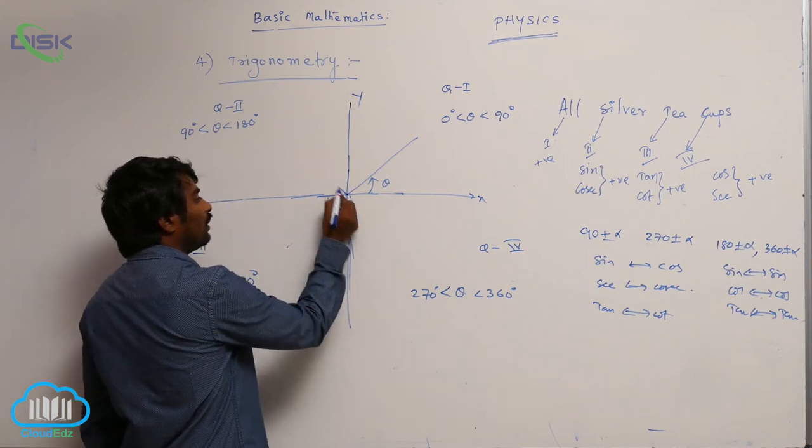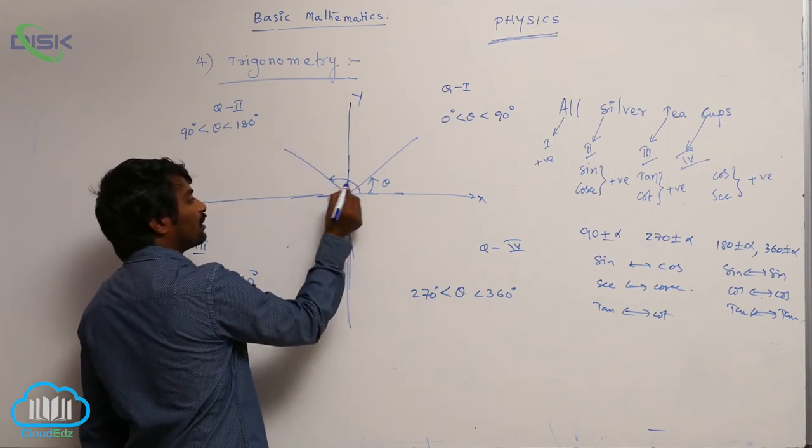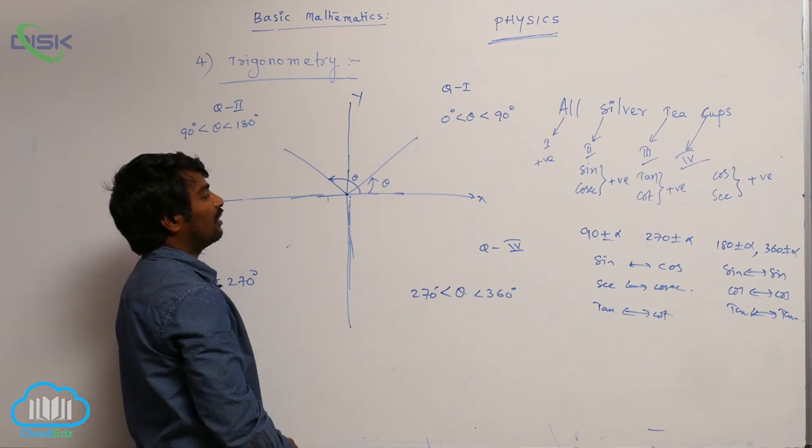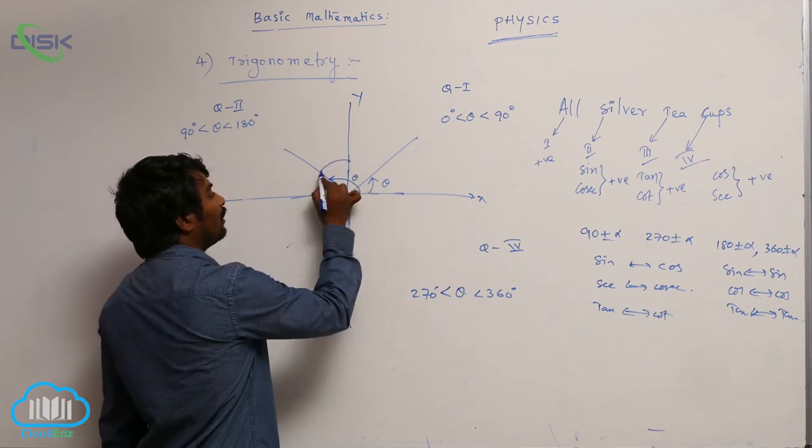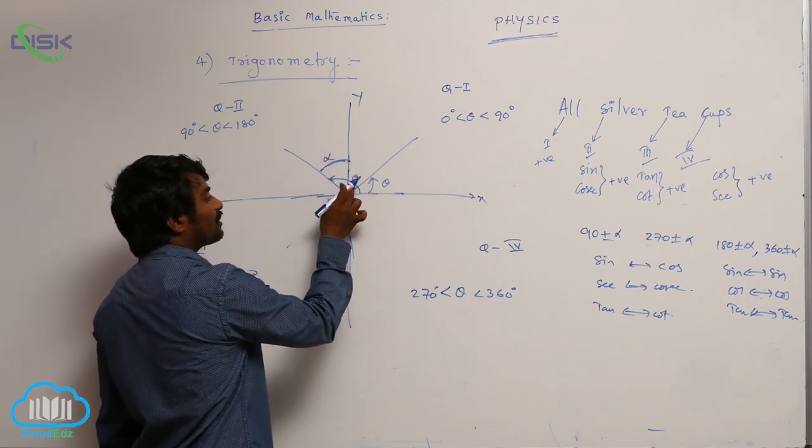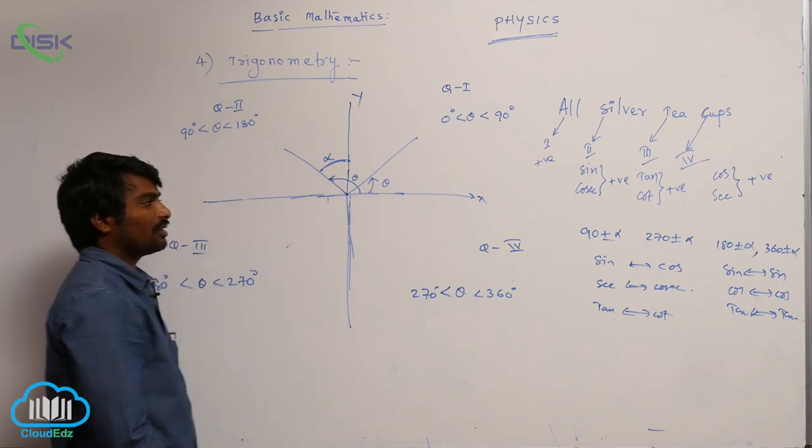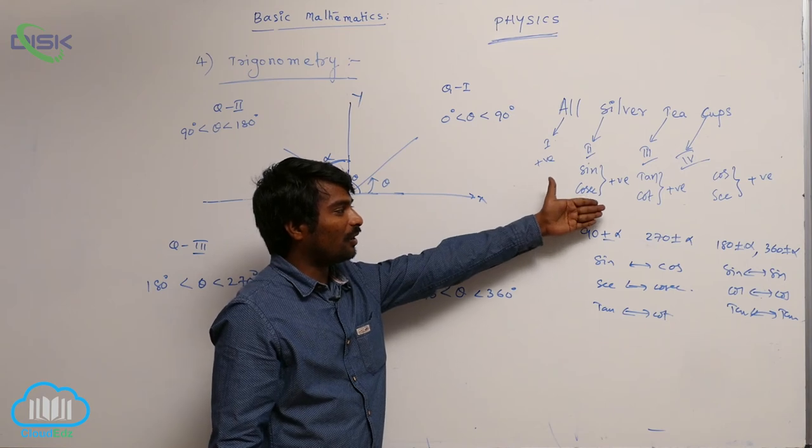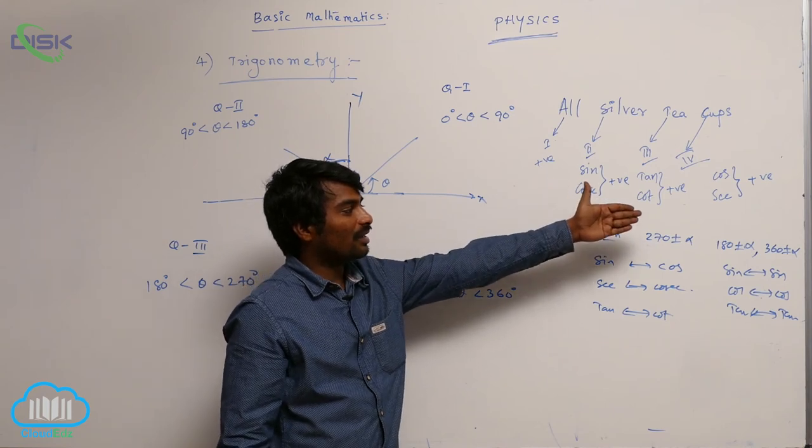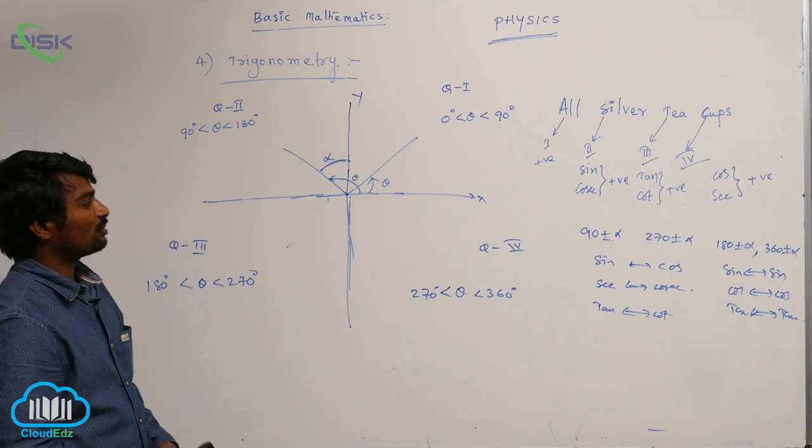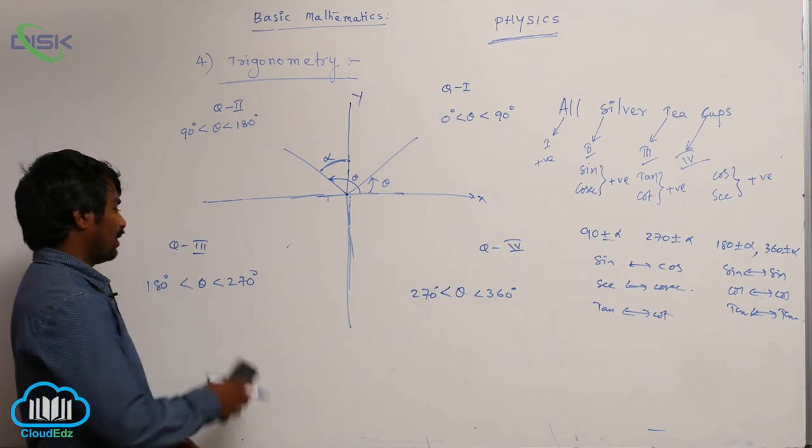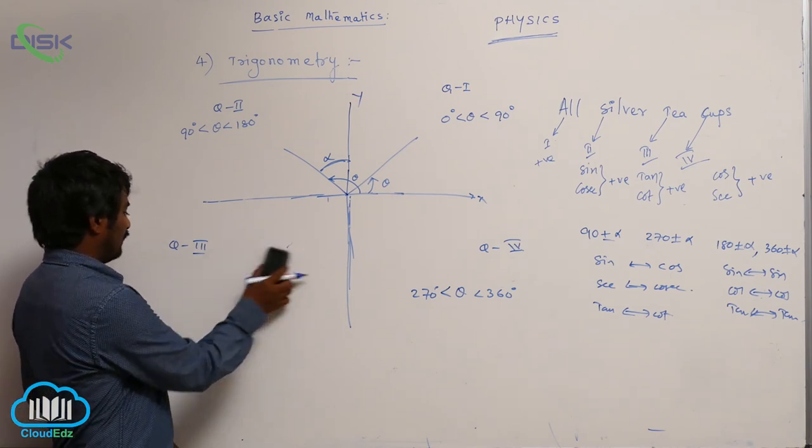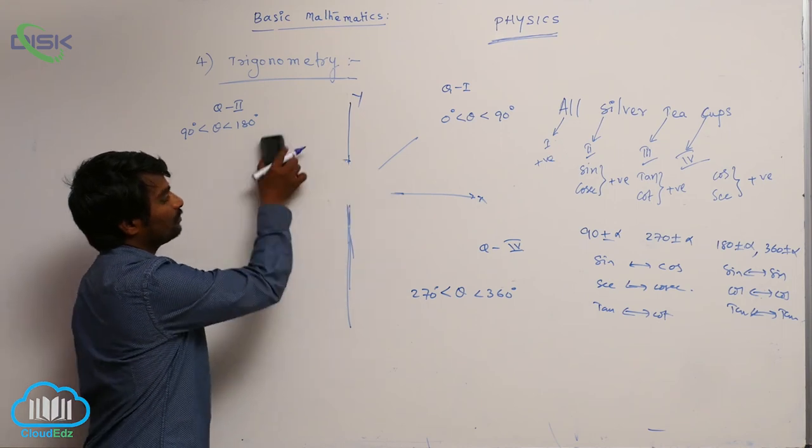Suppose we have this angle. It is greater than 90 degrees. If it is alpha, we can write it as 90 plus alpha. So sin 90 plus alpha, cos 90 plus alpha, tan 90 plus alpha, cot 90 plus alpha, secant 90 plus alpha. How to calculate those values? Let us see. I will draw one table. From that table, we will see.